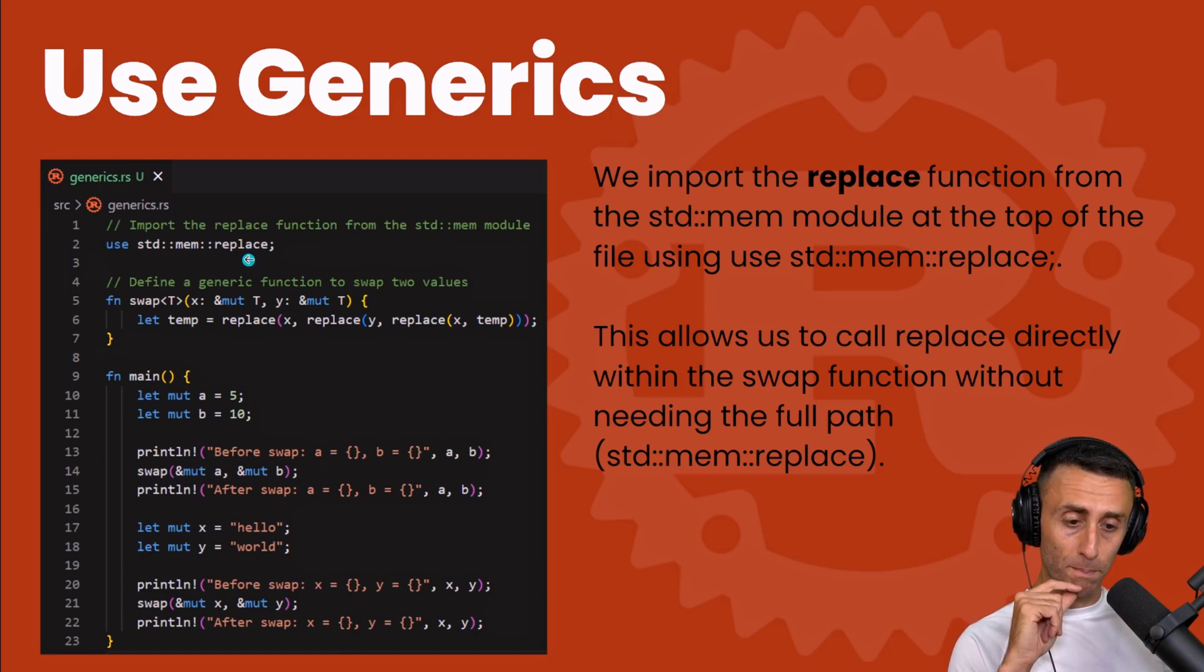Let's see an example of generics. We import the replace function, and we import this standard library memory replace. And check line function 5 - very important - function swap<T>, which takes two inputs of a generic type. Check how simple this function is. This is exactly what we want. We define this temporary variable, and then we replace x with y with this syntax. It's basically one line of code.